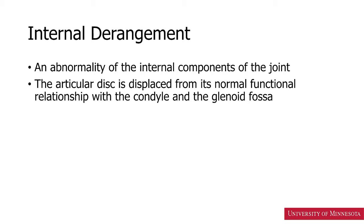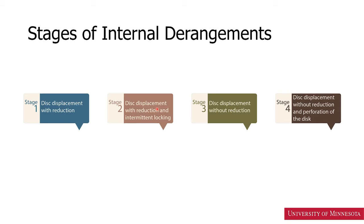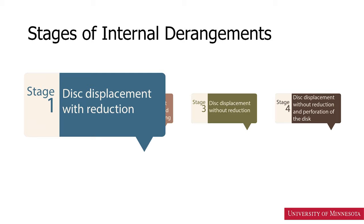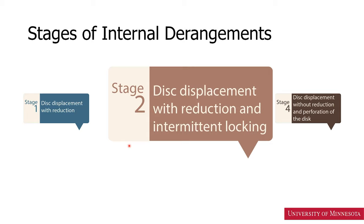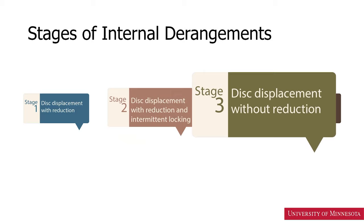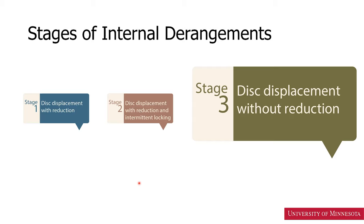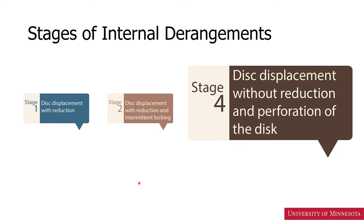The articular disc is displaced from its normal functional relationship with the condyle and the glenoid fossa. There are four stages of internal derangements. Stage one: the disc is displaced when the mouth is closed and it reduces when the mouth is open. Stage two is disc displacement with reduction and intermittent locking. Stage three means the disc is displaced when the mouth is closed and it does not reduce when the mouth is open. Stage four is disc displacement without reduction, in addition with perforation of the disc.